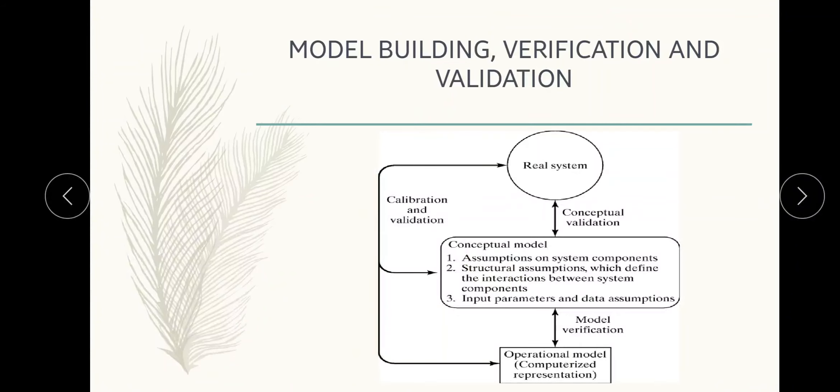Now we move on to model building, verification and validation. The diagram represents the model building, verification and validation process. The first step consists of observing the real system and the interactions among its various components and collecting data on its behavior. Operations, technicians, repair and maintenance personnel, engineers, supervisors and managers understand certain aspects of the system which may be unfamiliar to others. As model development proceeds, new questions may arise, and the model developers will return to this step of learning the true system structure and behavior.